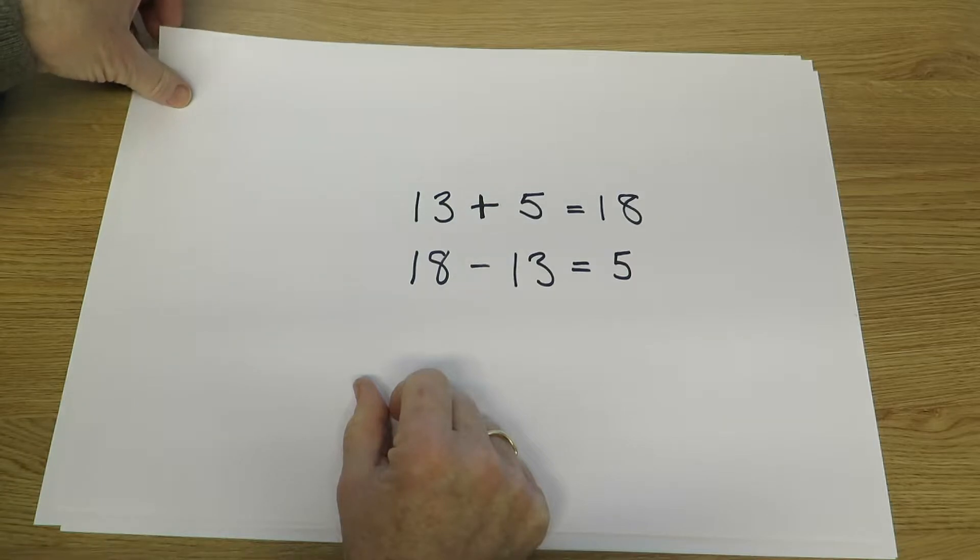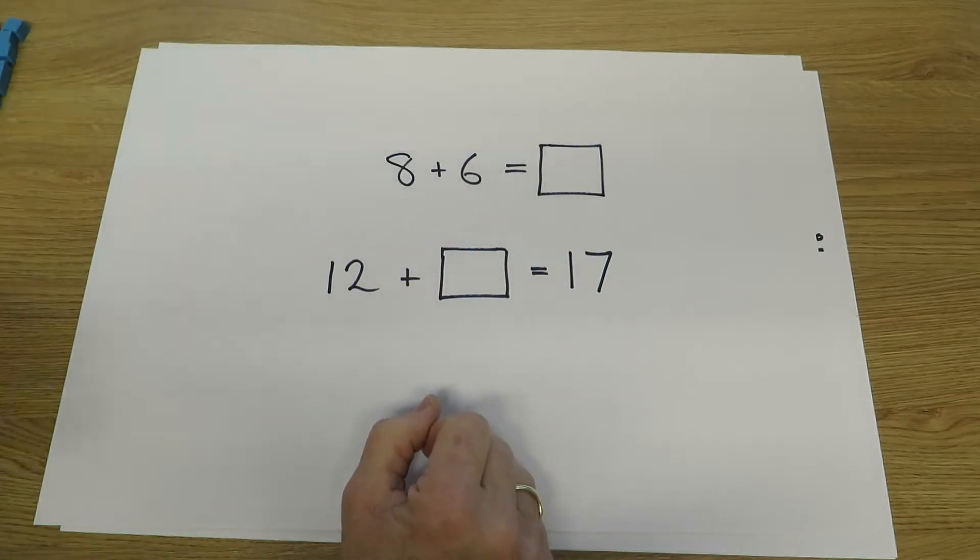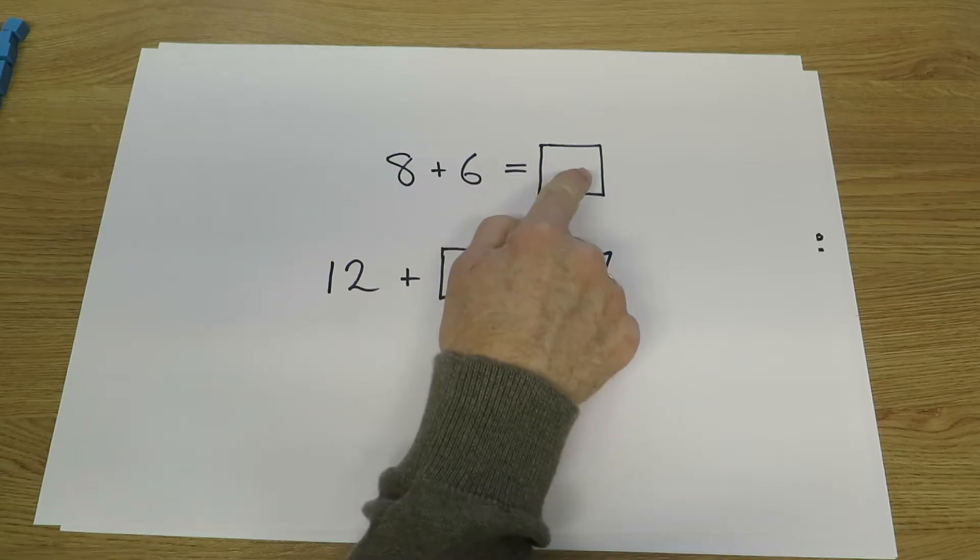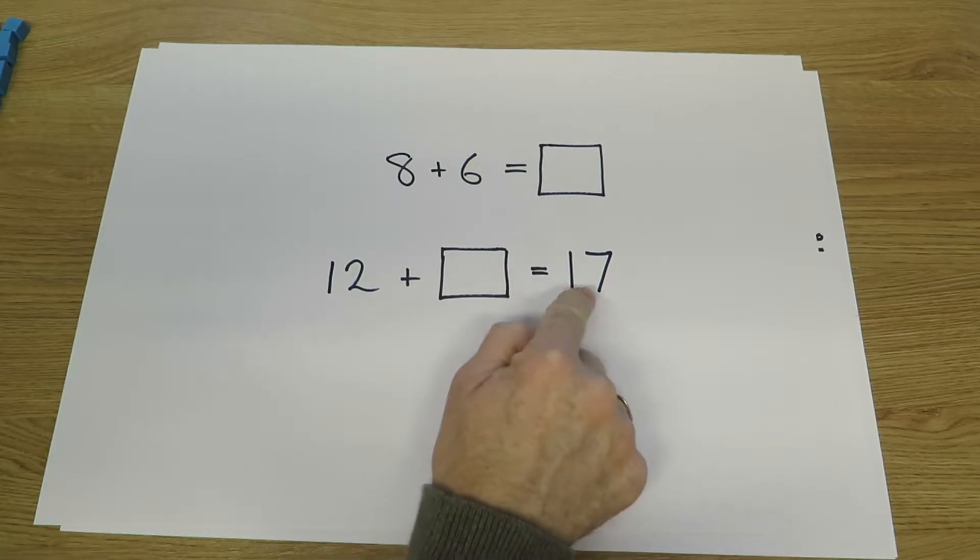At this stage the children are encouraged to remember and use addition and subtraction facts to 20 fluently. They need to be able to answer quickly questions such as 8 add 6 equals what, or 12 add what makes 17.